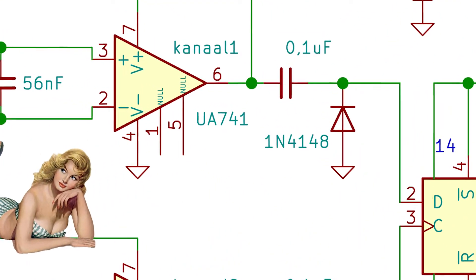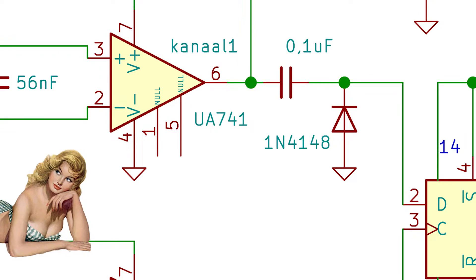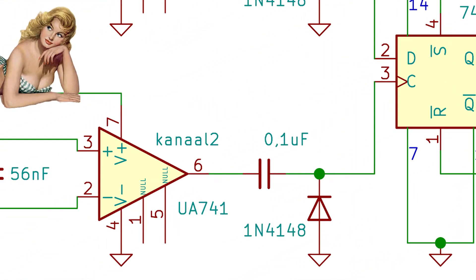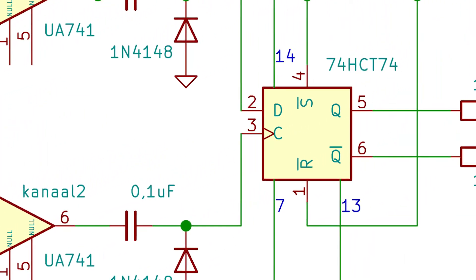The first signal, let's call it the data signal, is fed to the data input of the 7474 D flip-flop. The second signal, let's call it the clock signal, is also fed to the 7474 but on the clock input.